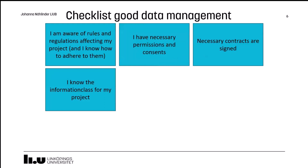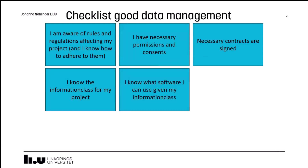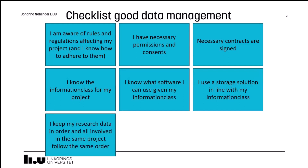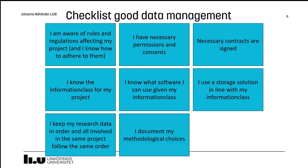You need to know the information class for your project so you know how to keep it safe. If you know your information class, you can also see what kind of software you're allowed to use — software deemed safe enough to use with your data — and also what kind of storage solution you need. You need to keep order on your research data, and all involved in the same project should follow the same order, because otherwise it's very difficult to find which versions are correct and what has happened to different files. You need to document the choices you have been making, so you can see the difference between different files and reuse them, and also trace back the conclusions you have drawn.